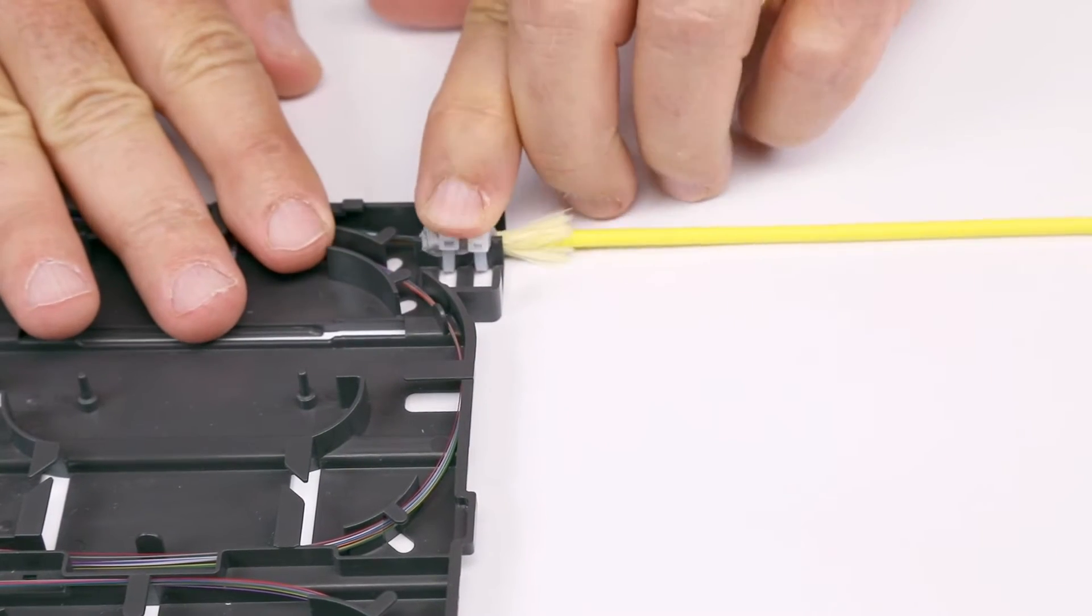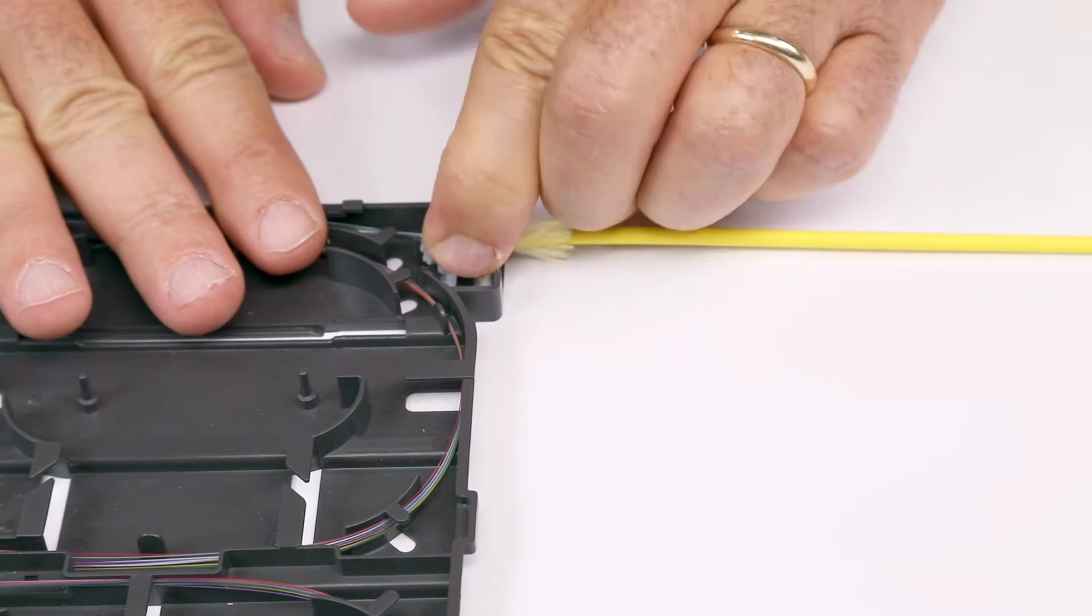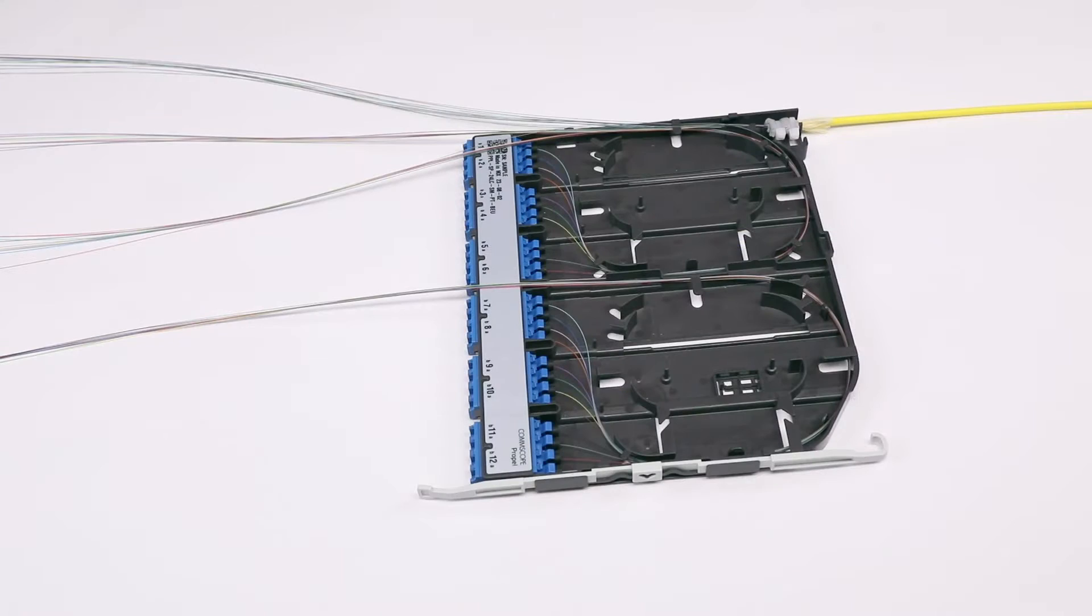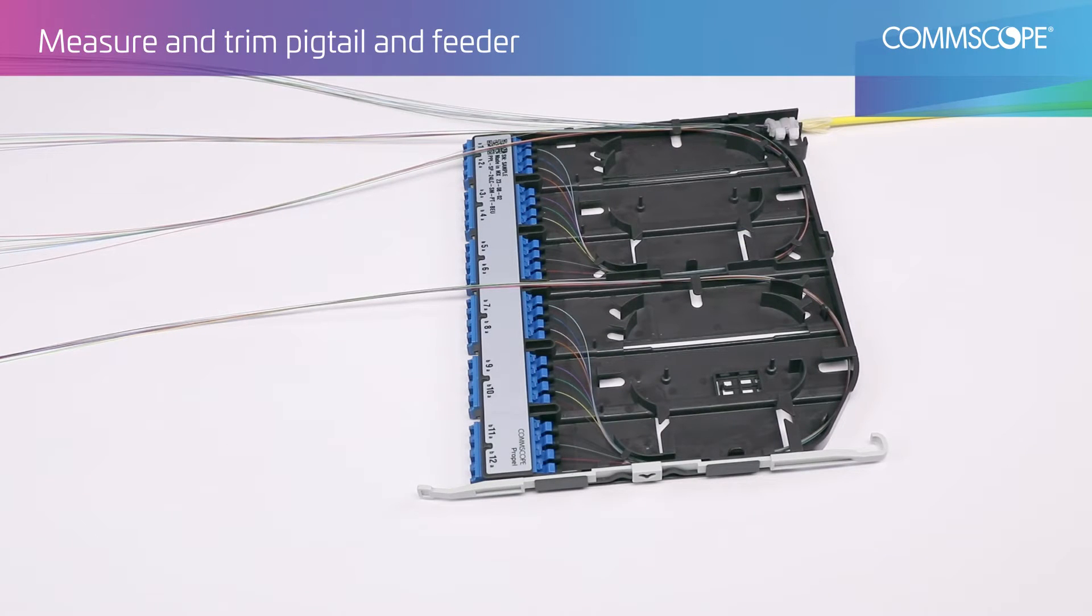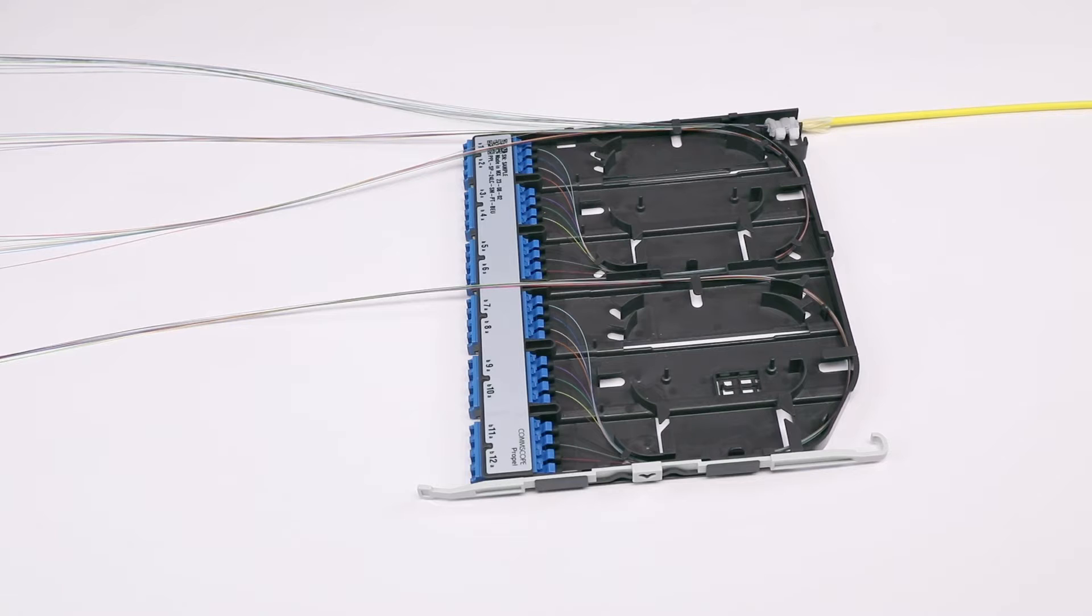Push the head downward until it is below the top of the cassette wall. If using 24 fiber cable, separate into fibers 1 through 12 and 13 through 24. Then extend feeder fibers beyond the front of the cassette base.